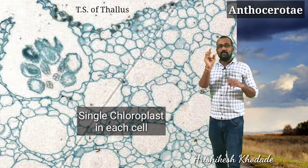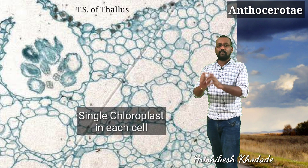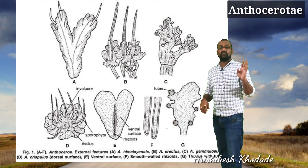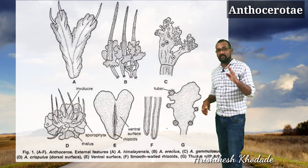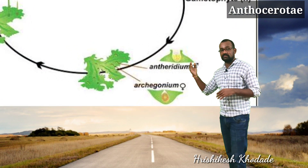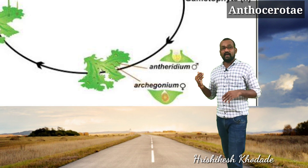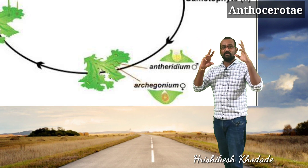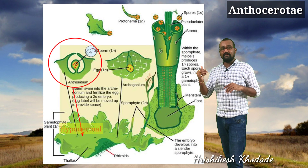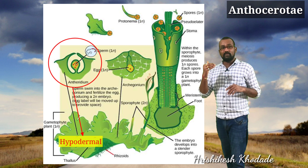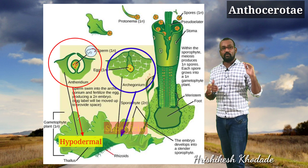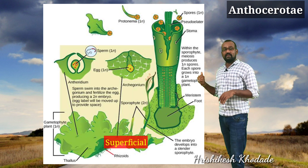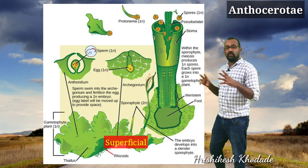The diagram shows that the Anthocerotae member has no air pores. The complete plant body shows each cell with a conspicuous compact chloroplast-like structure, which is very different from Hepaticae. Regarding the reproductive portion, the male organs are antheridia and female organs are archegonia. The antheridia develop from hypodermal tissues, but the archegonia develop from superficial tissues — this is the key difference in developmental fashion of the two sex organs in hornworts.